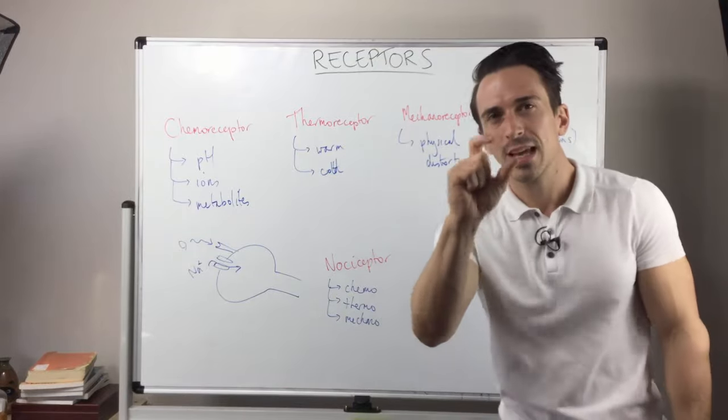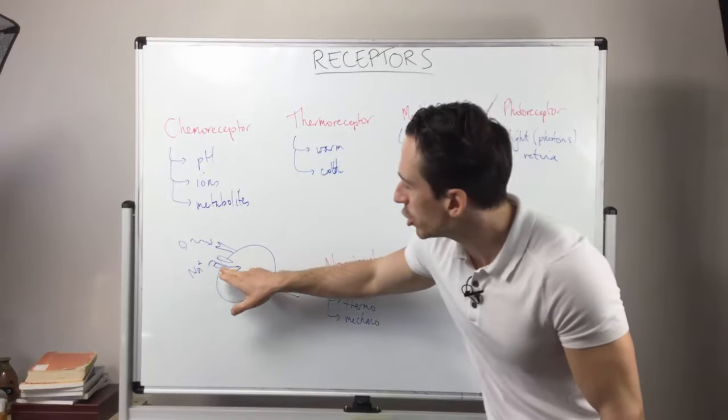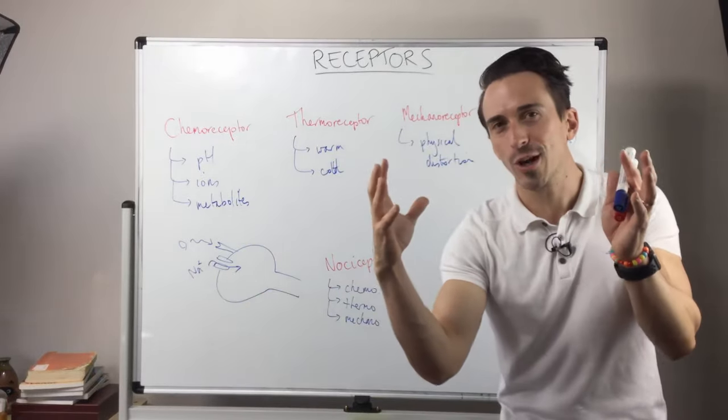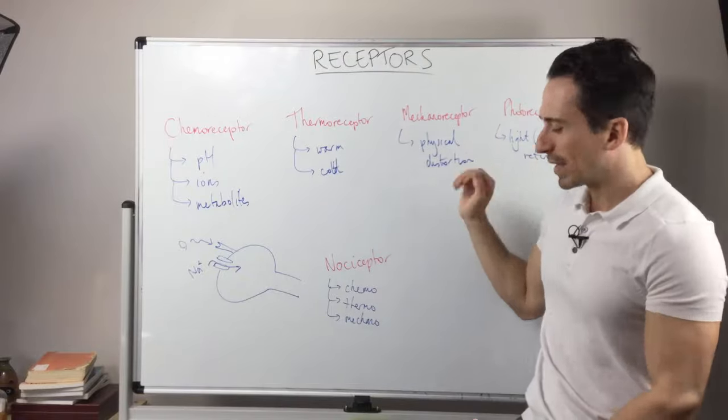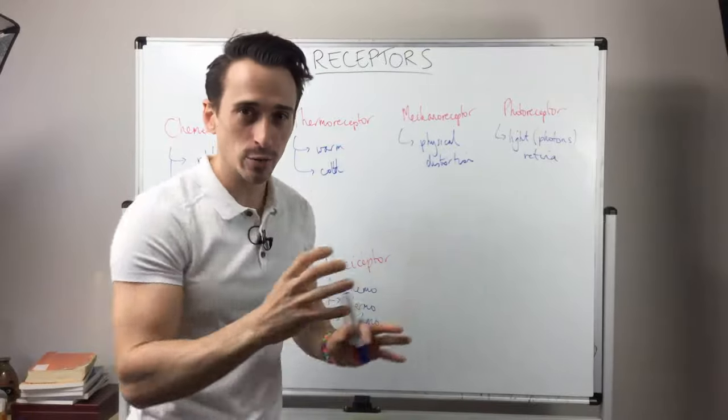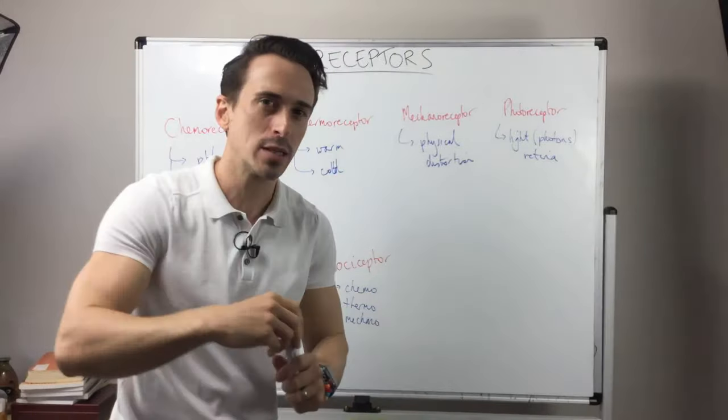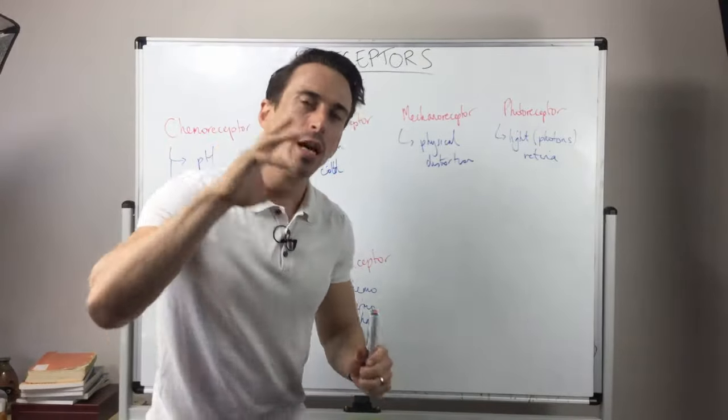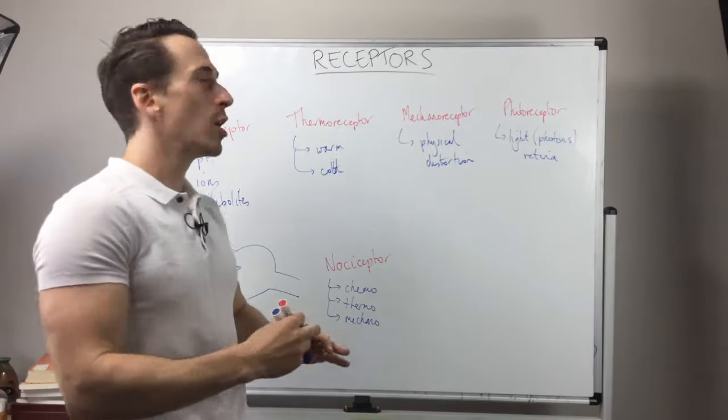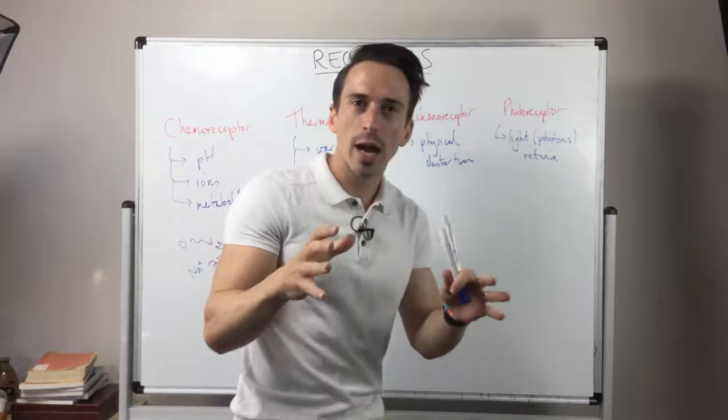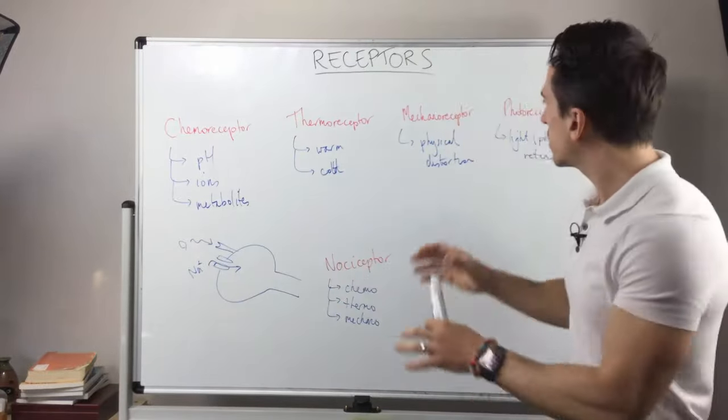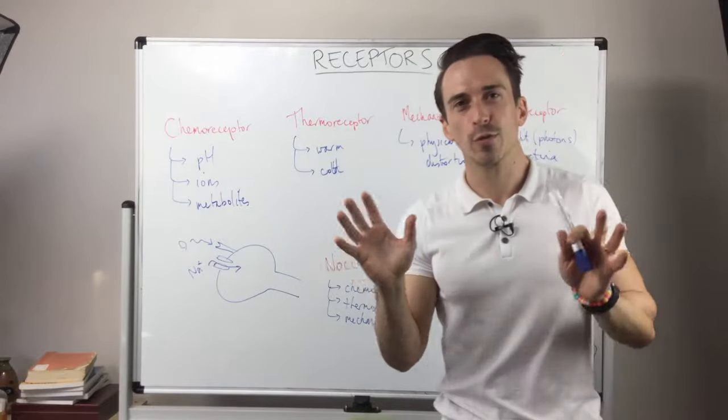When we look at thermoreceptors, the temperature changes the permeability of the membrane allowing for ion channels to open up. When we look at mechanoreceptors, physical distortion of that membrane opens ion channels up. When we look at photoreceptors, photons or light changes the permeability of those ions, and when we look at nociceptors, all three of them can change the permeability of the membrane to open up ion channels. So this is a quick run through of different types of receptors.